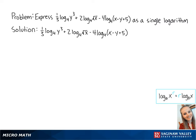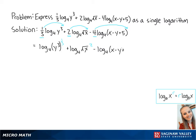First, we're going to use the power property to rewrite these numbers as exponents. So this becomes the log base 4 of y cubed to the 1/3 power, plus the log base 4 of the square root of x squared, minus the log base 4 of x minus y plus 5 to the 4th power.